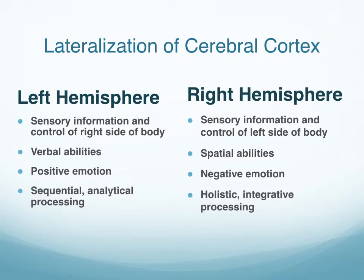We process information differently in each hemisphere. In the left hemisphere, where we process language, we seem to be using sequential, step-by-step analytic processing — well-suited for communicative information. Think about processing a sound, which combines with other sounds to become a word, and words combine to become sentences — that's very sequential processing. The right hemisphere, on the other hand, processes information in a more holistic or integrative way, as needed for spatial abilities like navigating with a map or finding your way back to your car.